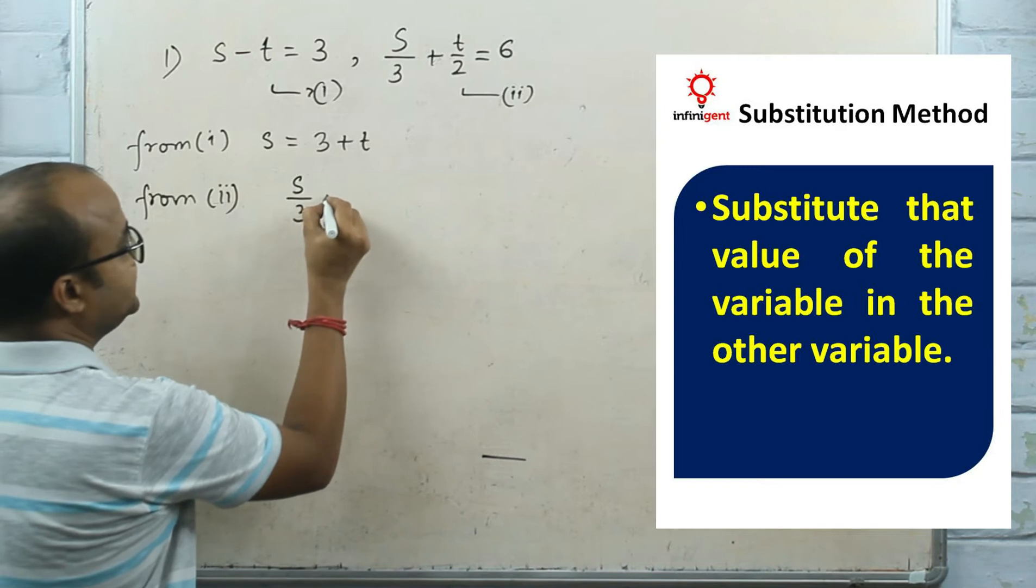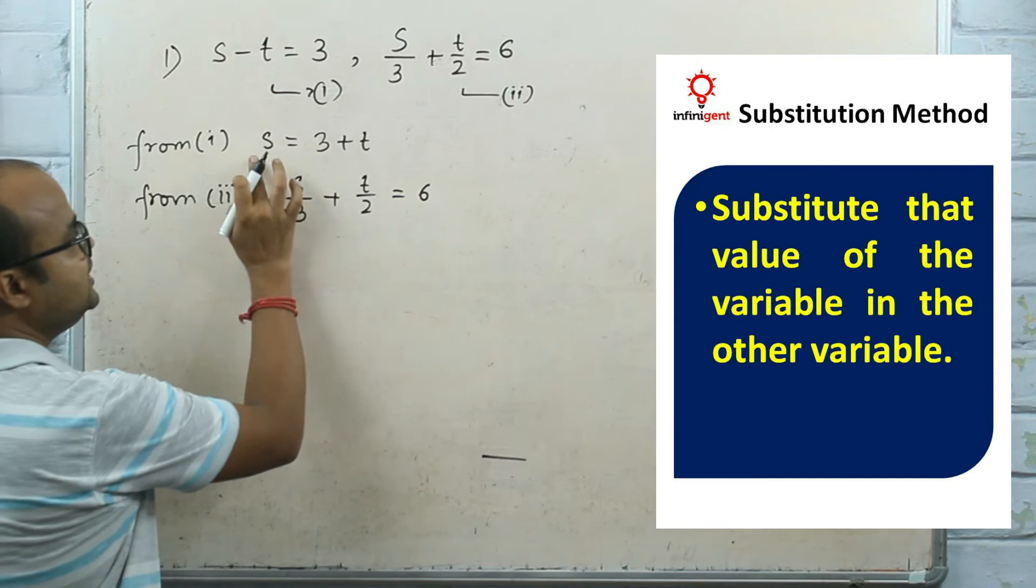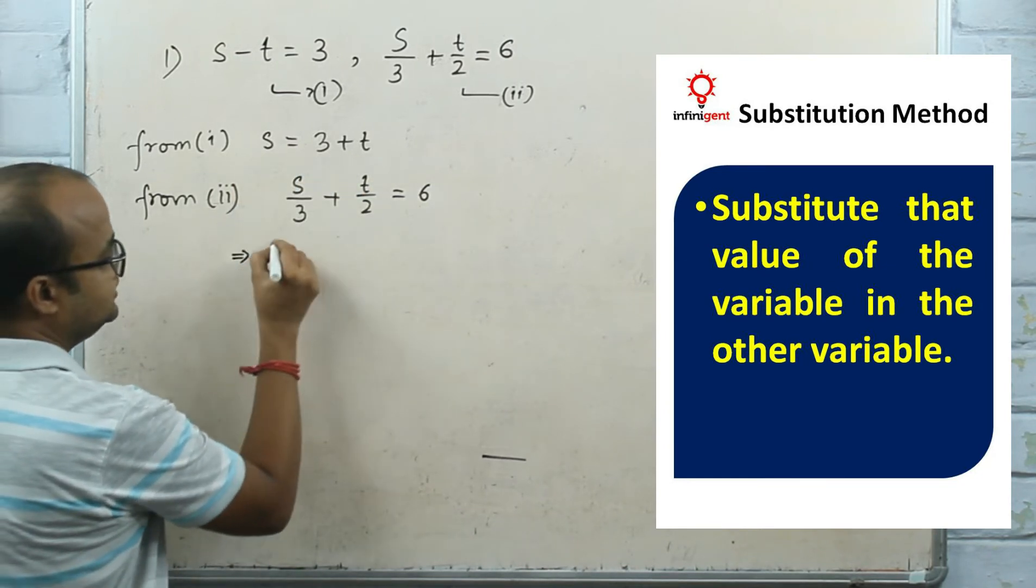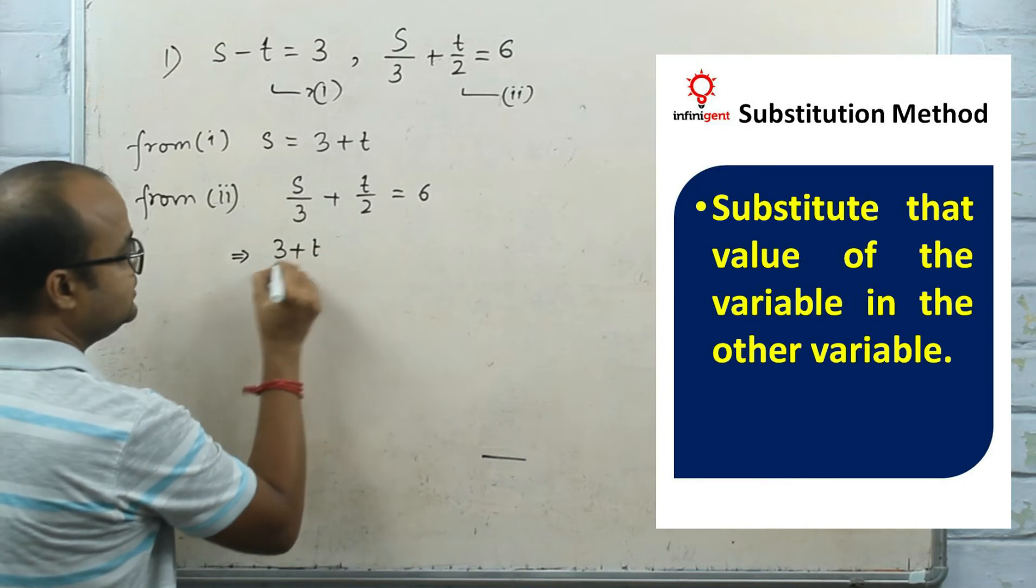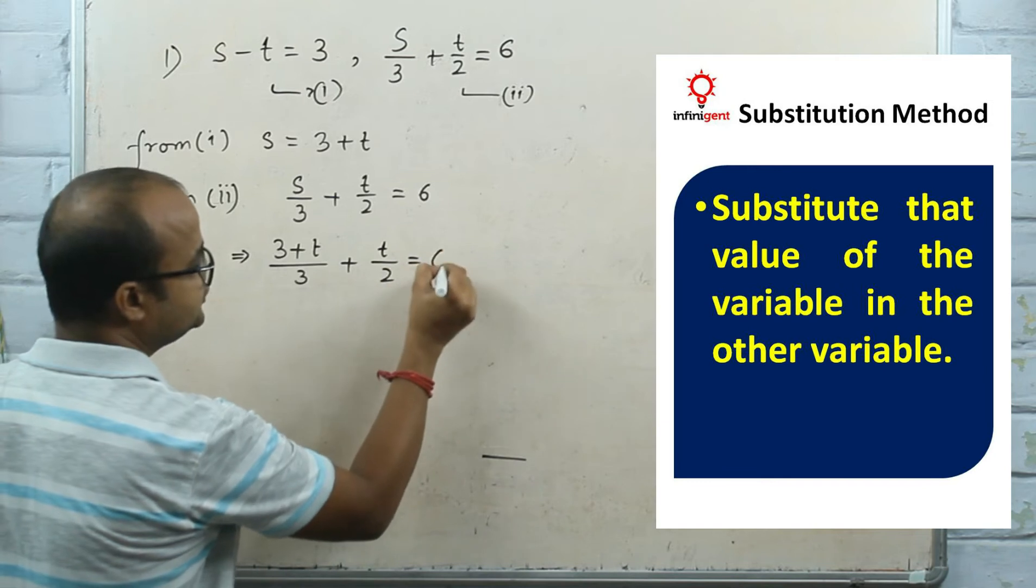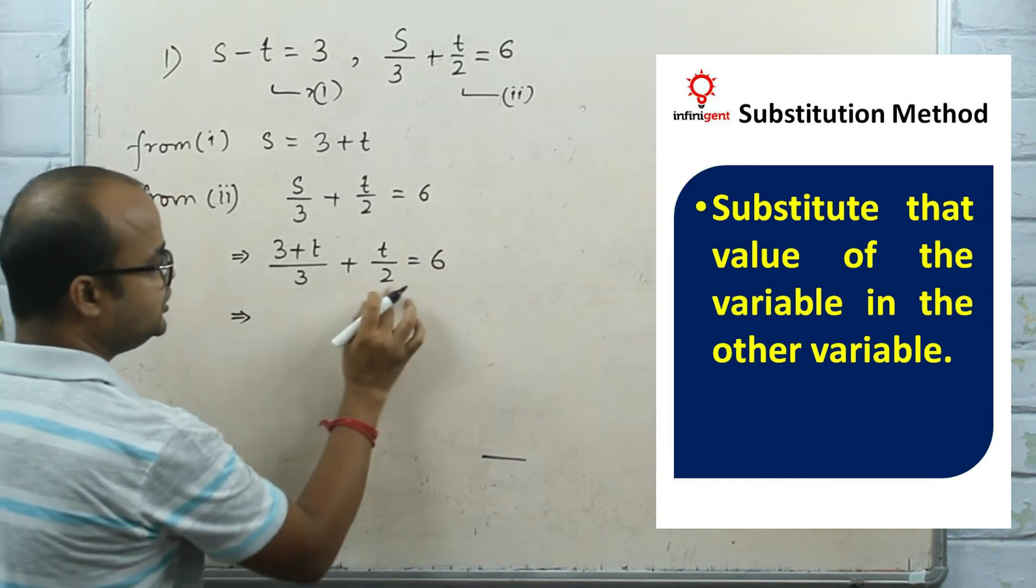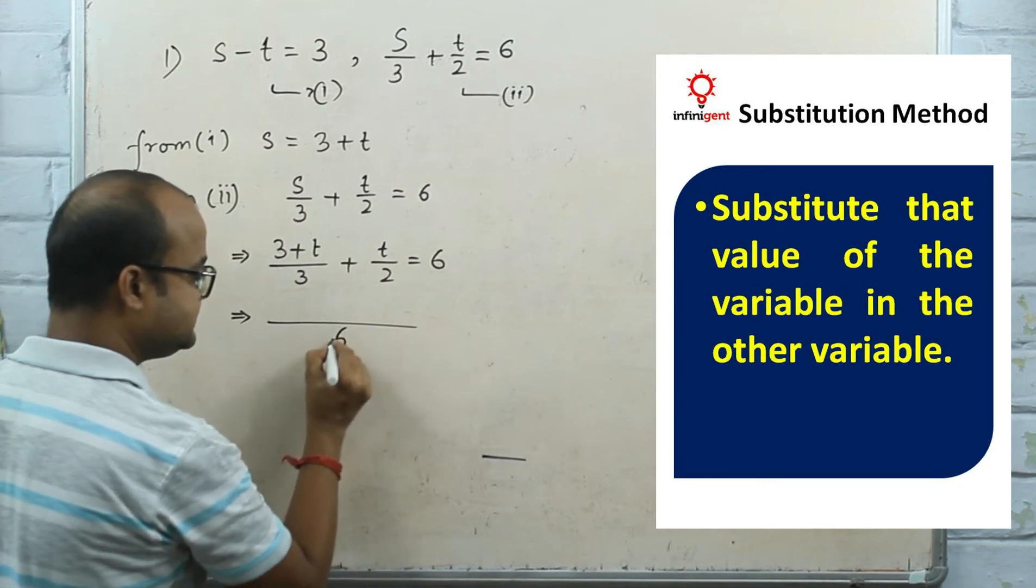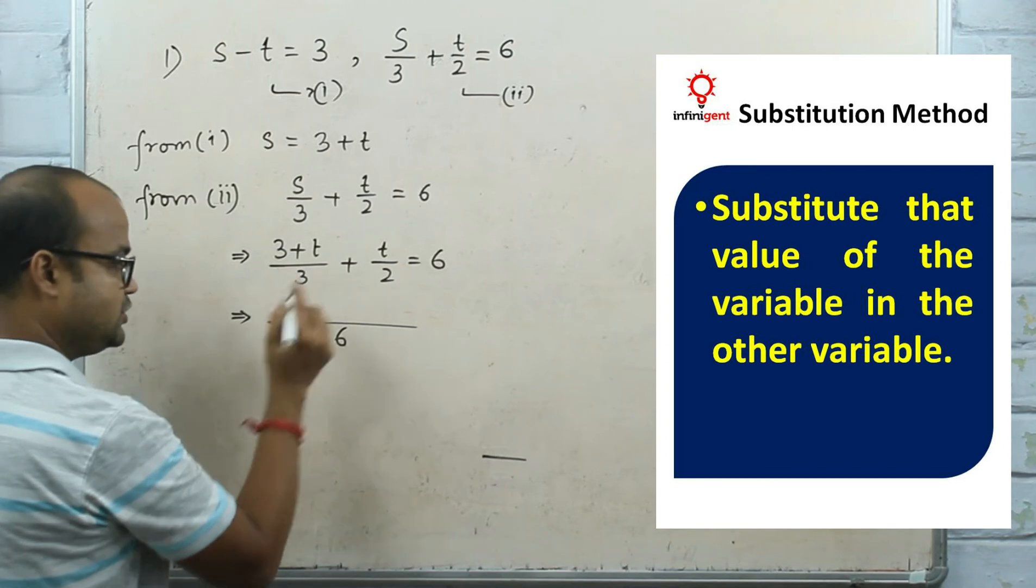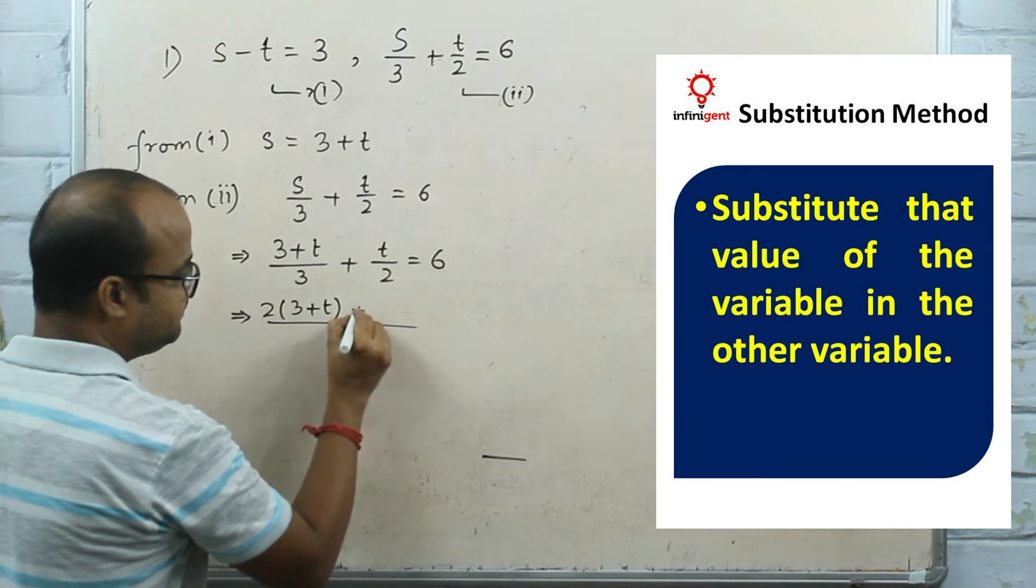From equation 2: S/3 + T/2 = 6. Here S ke jager kya aapko baithana hai, 3 + T baithana hai. So (3 + T)/3 + T/2 = 6. Now simplify: the LCM of 3 and 2 is 6. 6 divided by 3 equals 2, so 2(3 + T) + 3T = 6.